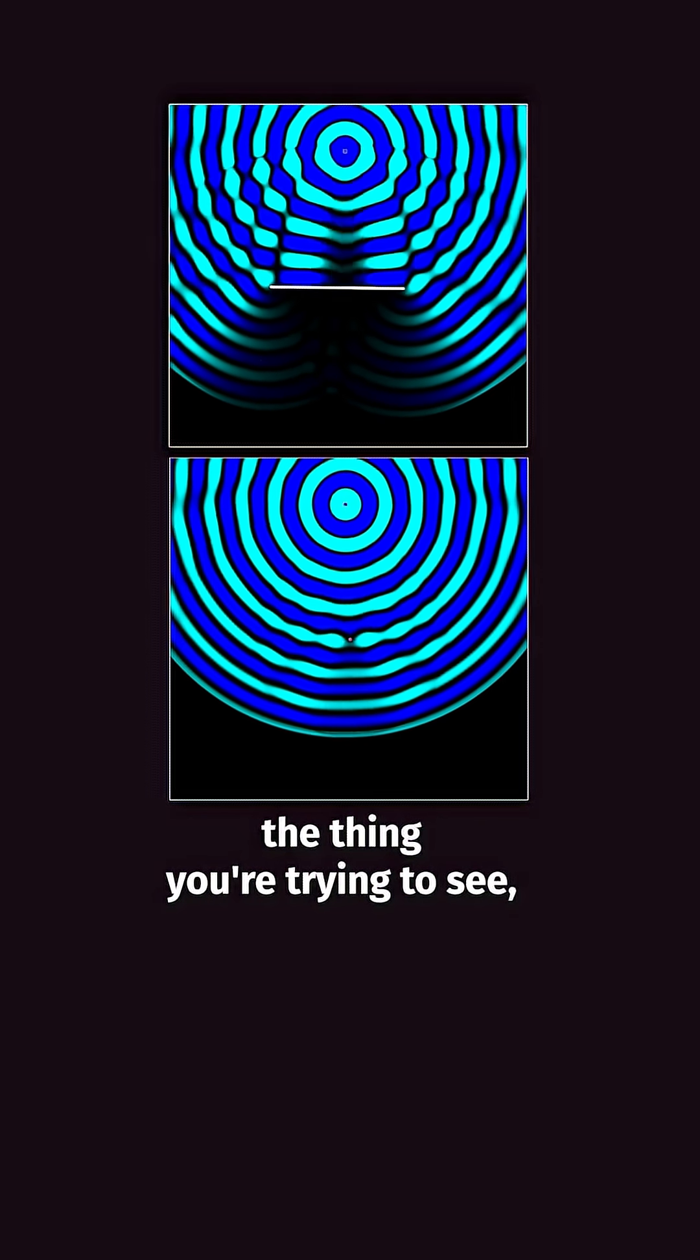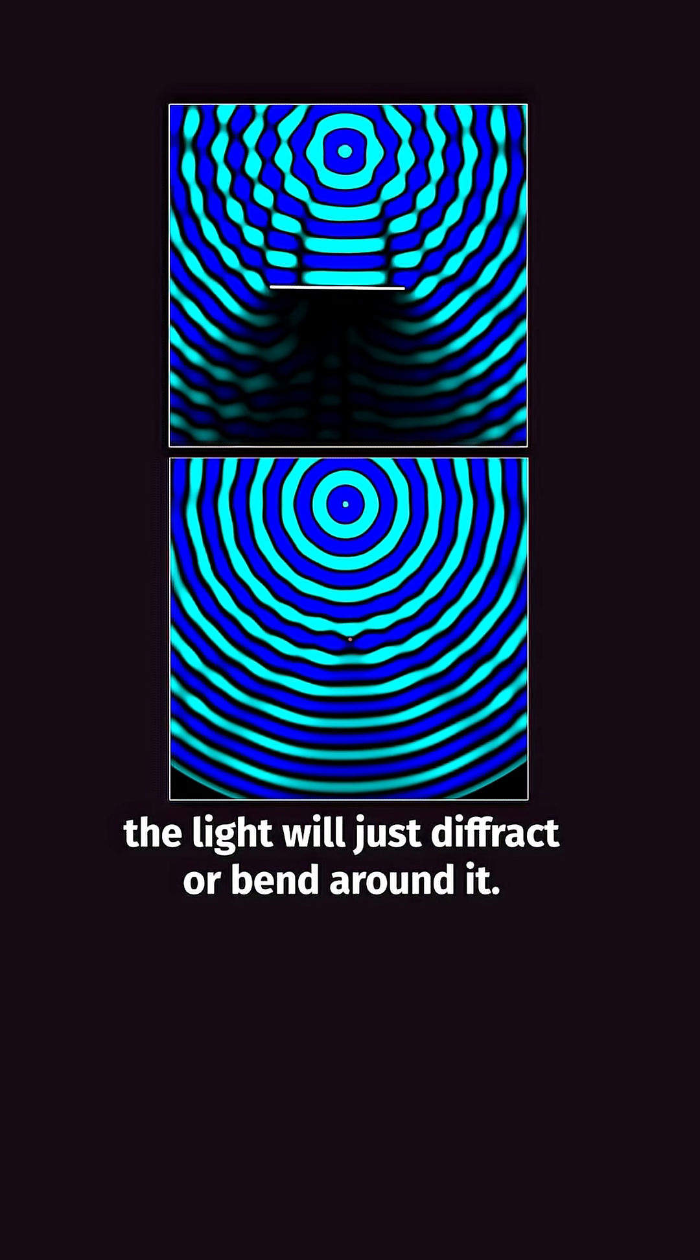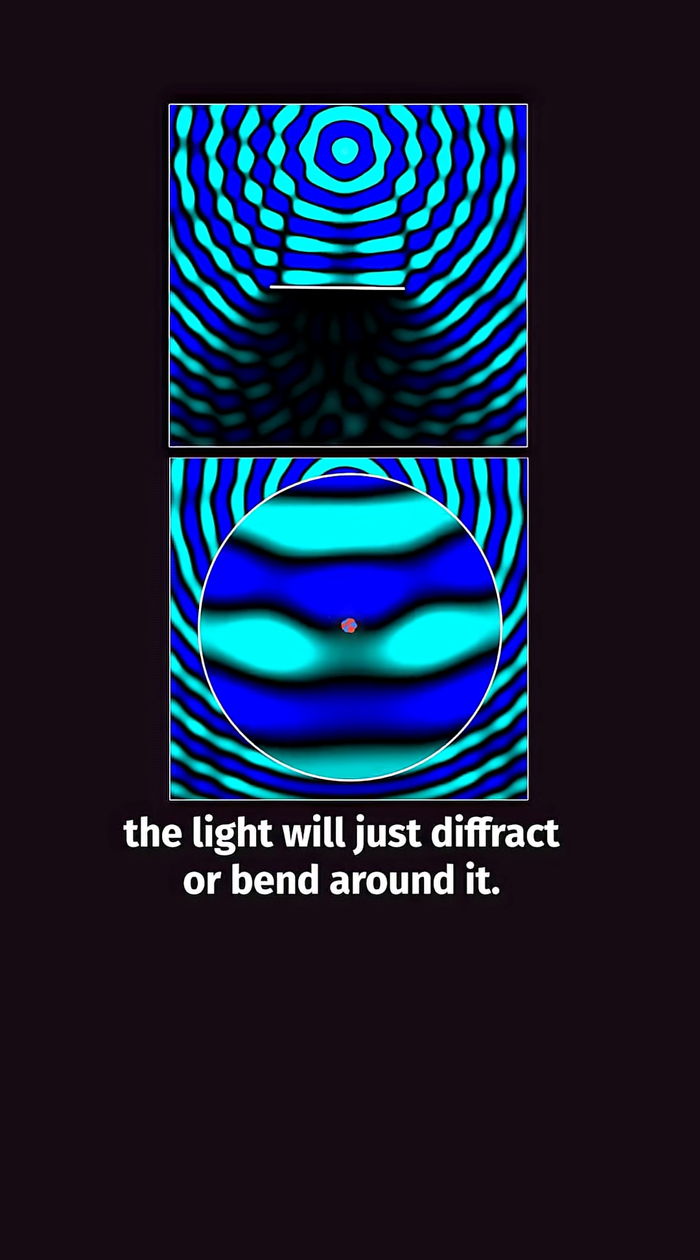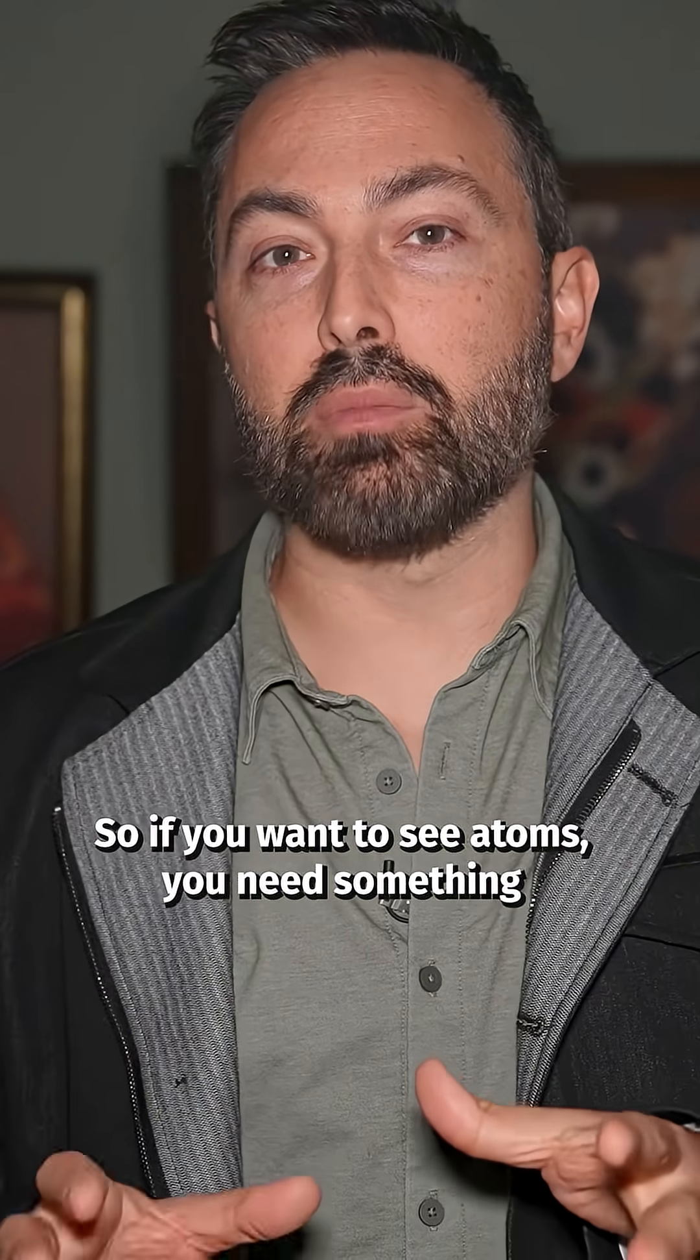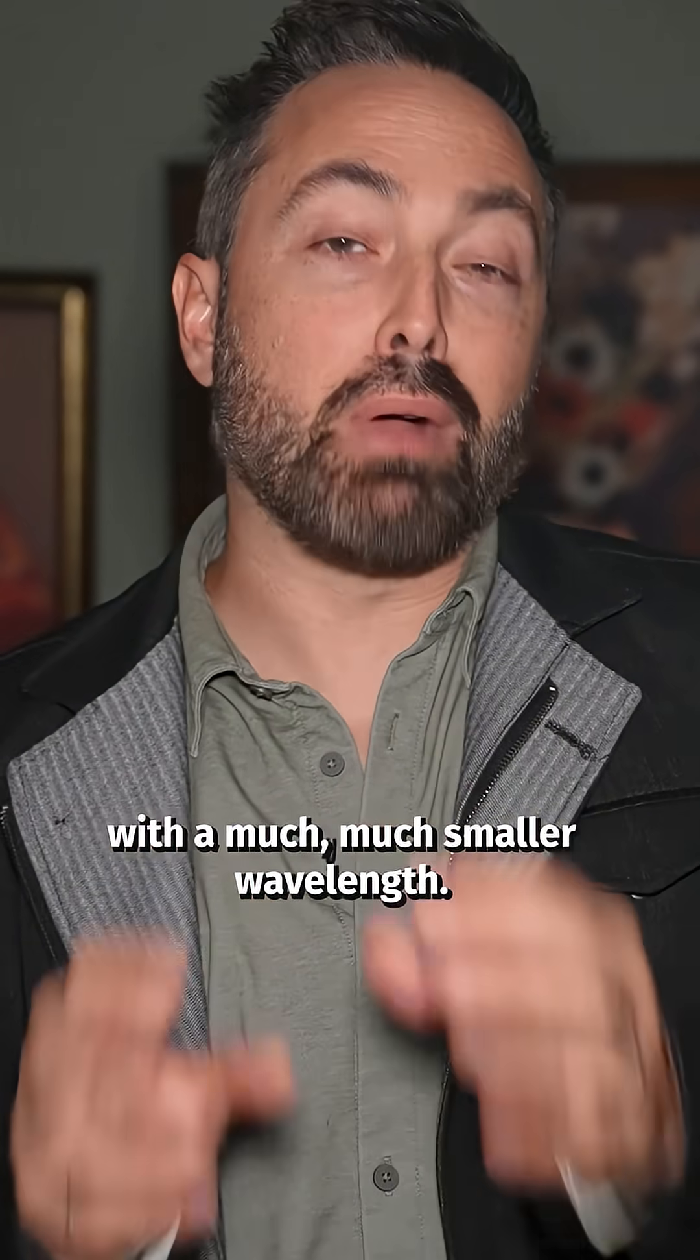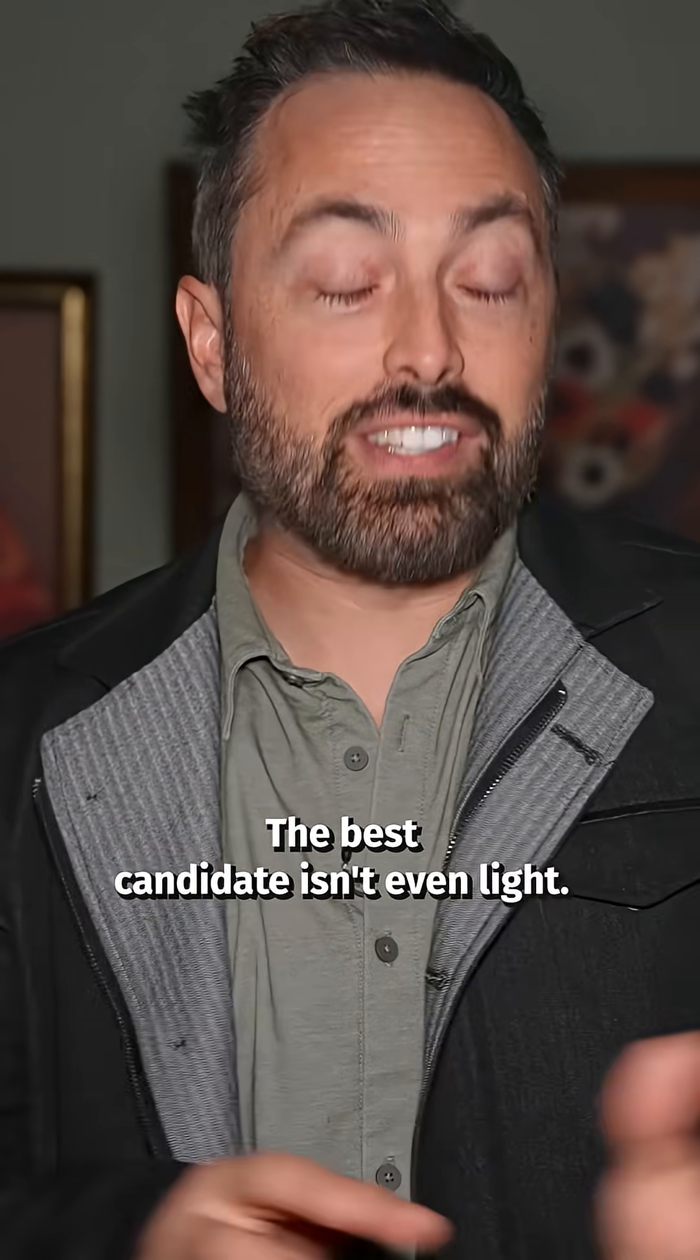And if the wavelength of light is much bigger than the thing you're trying to see, the light will just diffract or bend around it, so you won't be able to see it. So if you want to see atoms, you need something with a much, much smaller wavelength. The best candidate isn't even light. It's electrons.